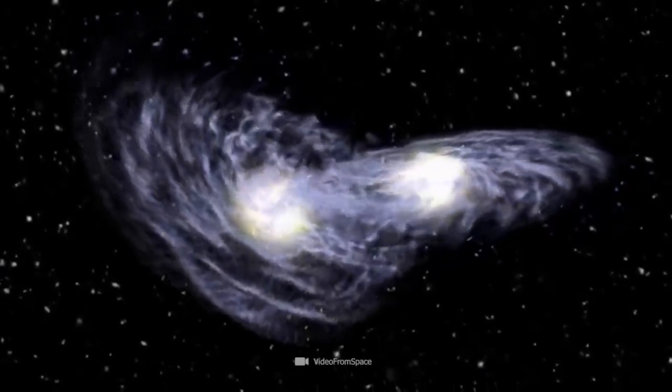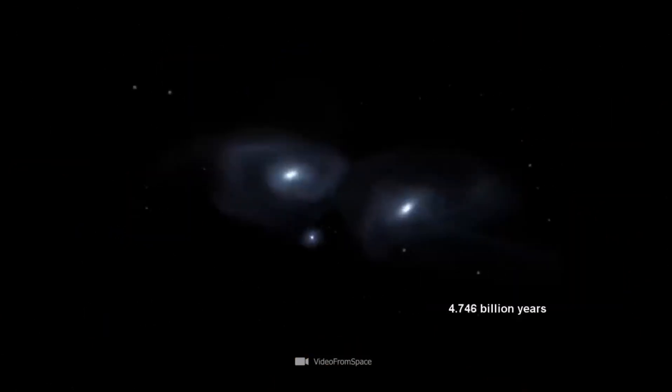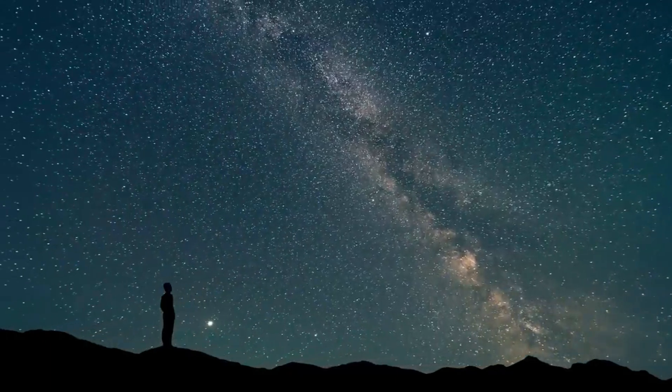If you multiply these numbers, you arrive at an almost unimaginable number of stars in the entire universe. And each of these stars may have planets orbiting around them, some of which are similar to Earth and could harbor life.